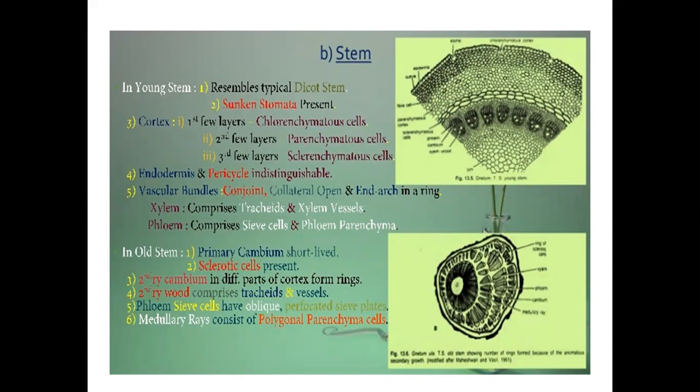Stem: in the young stem, which resembles a typical dicot stem, sunken stomata are present. Cortex has few layers of parenchyma cells and few layers of sclerenchyma cells. Endodermis and pericycle are indistinguishable. Vascular bundles are conjoint, collateral, open, and endarch in a ring. Xylem comprises tracheids and xylem vessels; phloem comprises sieve tube cells and phloem parenchyma. In the old stem, primary cambium is short-lived and sclerotic cells are present. Secondary cambium in different parts of the cortex forms a ring. Secondary wood comprises tracheids and vessels; phloem sieve cells have oblique perforated sieve plates. Medullary rays consist of polygonal parenchyma cells.